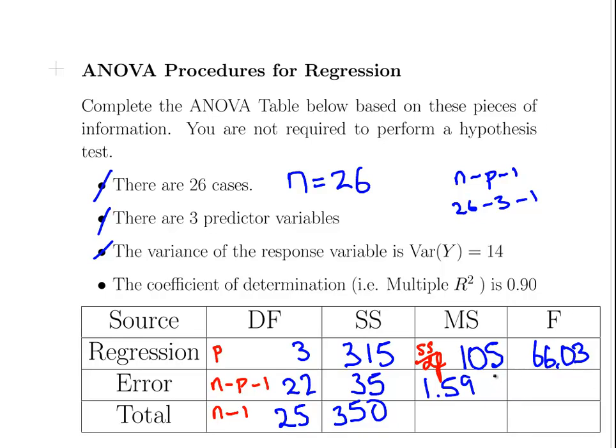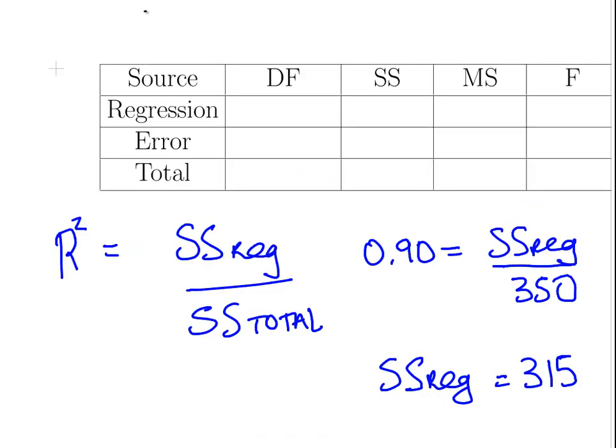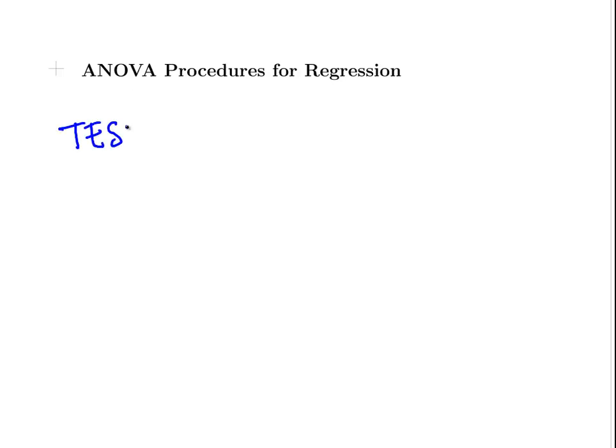We're not actually required to perform a hypothesis test, but just to state that this is the test statistic. The test statistic is an F random variable—that's a type of distribution, the F distribution.